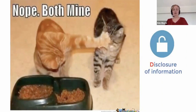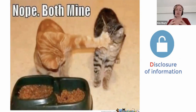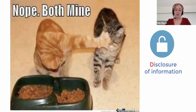Disclosure of information — this one is borrowed from STRIDE. It's a security property which is also important for privacy, and it's basically about protecting your assets: access control, encryption, those kinds of things.